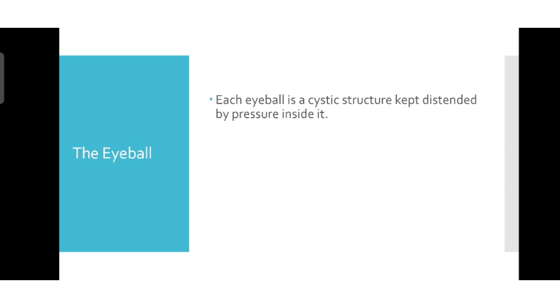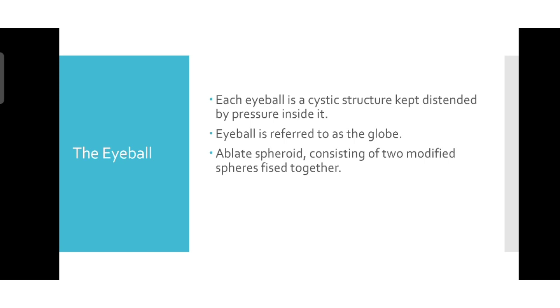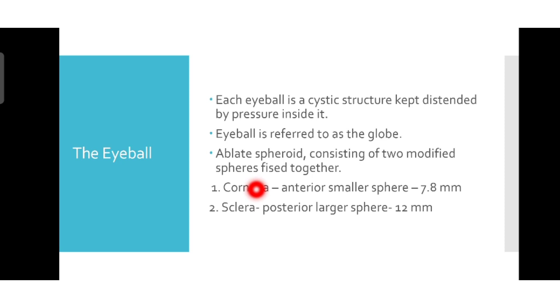Now let's talk about the eyeball. The eyeball is a cystic structure kept intact in a spherical form by the pressure inside it, mainly contributed by aqueous humor and vitreous humor. We also refer to the eyeball as the globe. It is composed of two modified spheres fused together, with an oblate spheroid shape. The anterior sphere is the cornea at 7.8 mm, and the posterior larger sphere is the sclera at 12 mm.